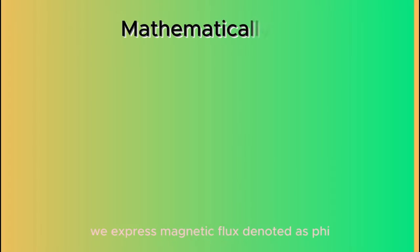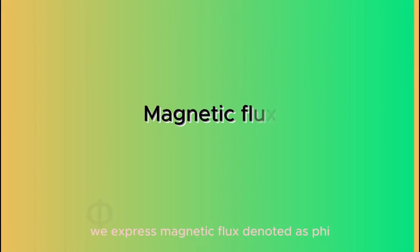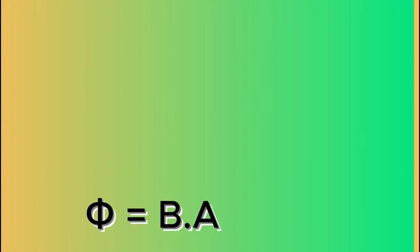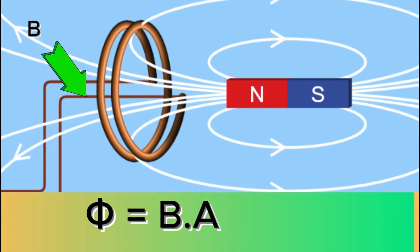Mathematically, we express magnetic flux, denoted as phi, as the product of the magnetic field B passing through the coil of wire and the coil's area A.